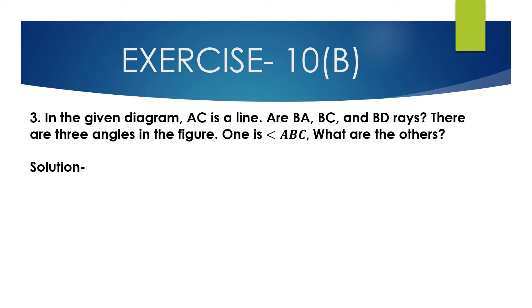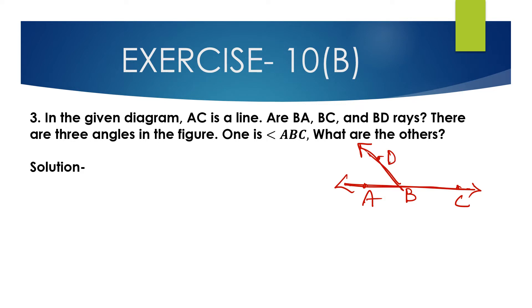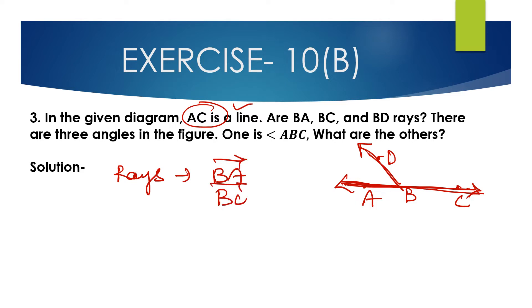Now we will solve question number 3. In the given diagram, AC is a line, and BA, BC, BD are rays from point B. There are 3 angles in the figure. One is angle ABC. The rays are BA, BC, and BD.